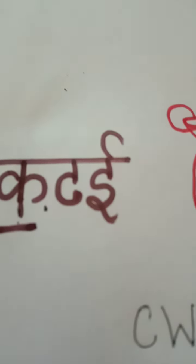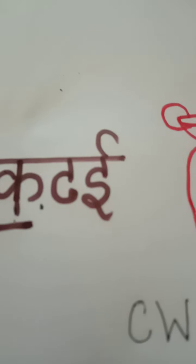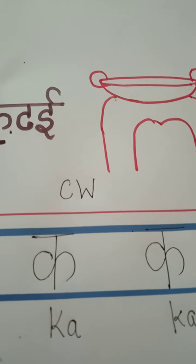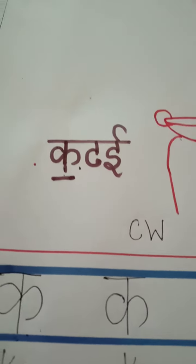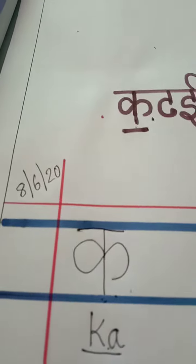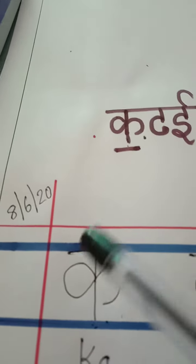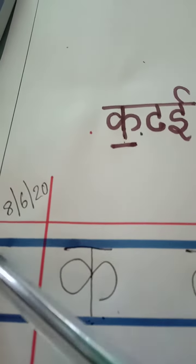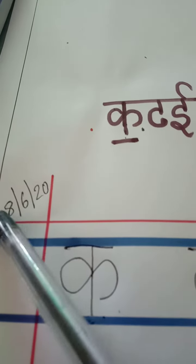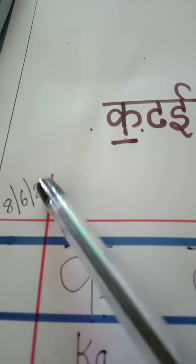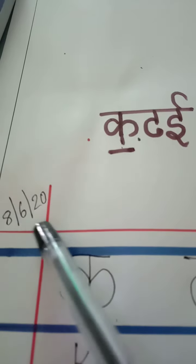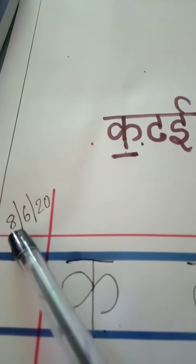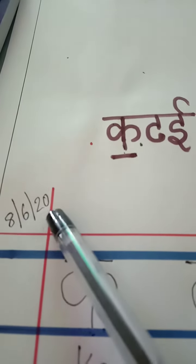My dear children, let us begin with CW. In your notebook, write CW on the top. Then begin with today's date. In your notebook, you will see a red color margin. You have to put the date in the block on the left side at the top. Today is 8th of June 2020.